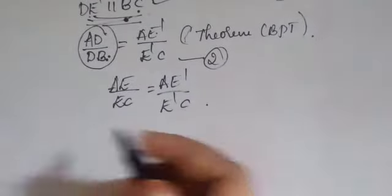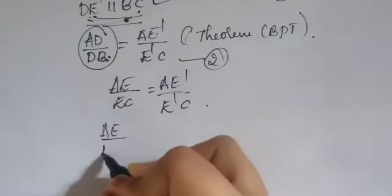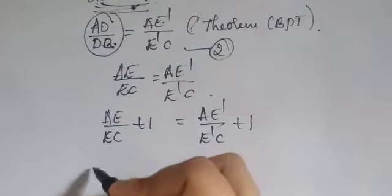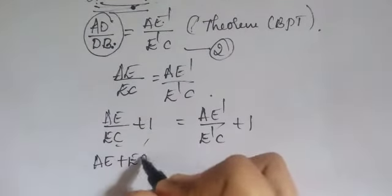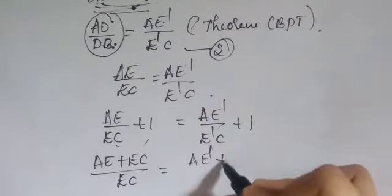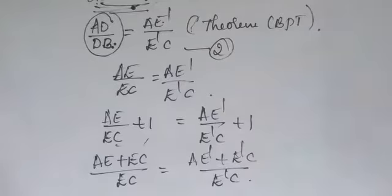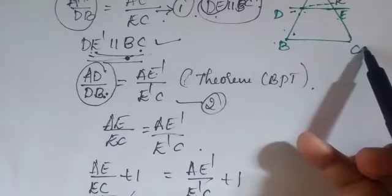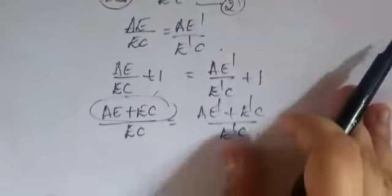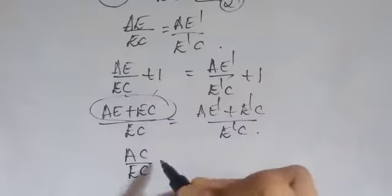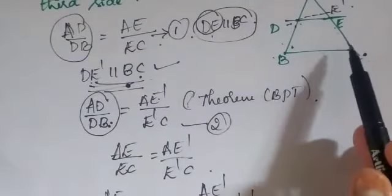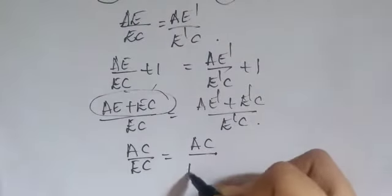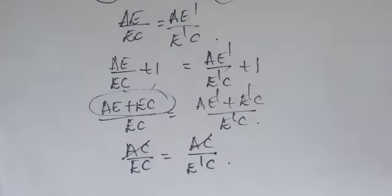Adding 1 to both sides: AE/EC + 1 = AE'/E'C + 1. Taking LCM: (AE + EC)/EC = (AE' + E'C)/E'C. Now AE + EC = AC and AE' + E'C = AC, so we get AC/EC = AC/E'C.